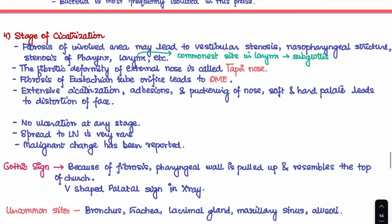The fourth stage is cicatrization, characterized by fibrosis and strictures of all involved areas, leading to vestibular stenosis, nasopharyngeal strictures, and stenosis of the pharynx and larynx. The most commonly stenosed area in the larynx is the subglottic region. The fibrotic deformity of the external nose is called tapir nose. Hebra nose is seen in the nodular stage, while tapir nose is seen in the cicatrization stage. Fibrosis of the Eustachian tube orifice can present with features of otitis media and diminished hearing.